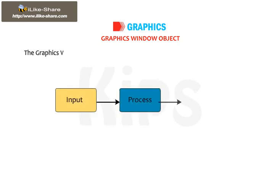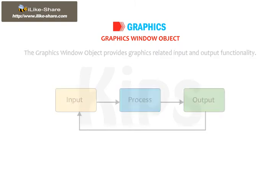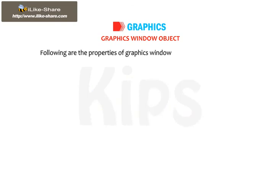The Graphics Window Object provides graphics-related input and output functionality. It is used to draw shapes, lines and text in many colors. Following are the properties of the Graphics Window with their default values.